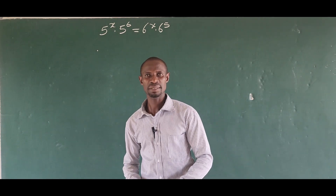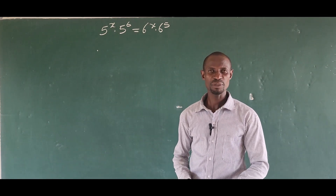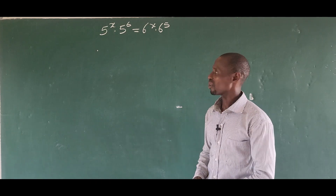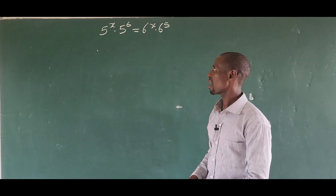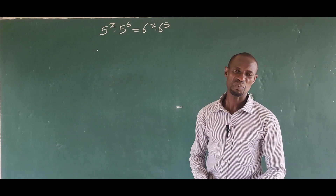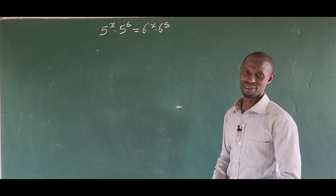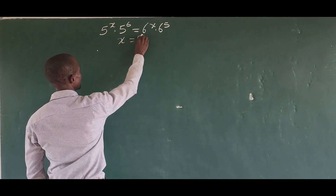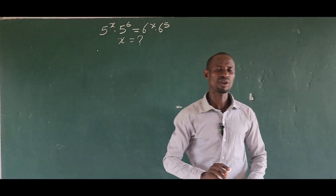Hello, great people, welcome to this math class. Look at this nice exponential challenge. The question is: 5 to the power of x times 5 to the power of 6 equals 6 to the power of x times 6 to the power of 5. What is the value of x? We are asked to find x.